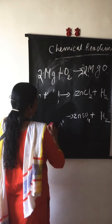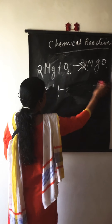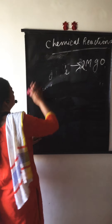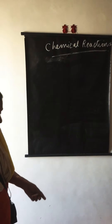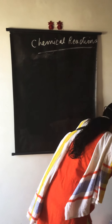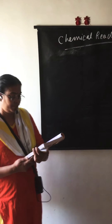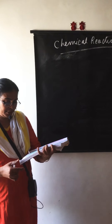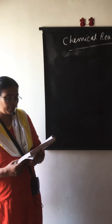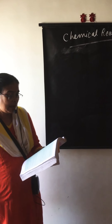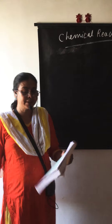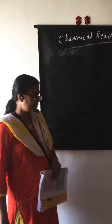Now let us see some examples from the textbook back exercises. Page 15: translate the following statements into chemical equations and balance them. First — hydrogen gas combines with nitrogen to form ammonia.